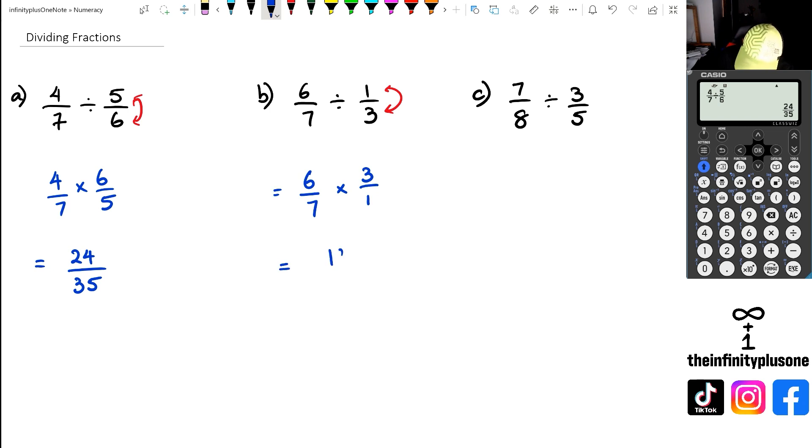Now I've got six times three, which happens to be 18, seven times one, which happens to be seven. And I don't think we can do anything beyond that. Now you might actually think about writing this as a mixed fraction, it's not necessary. But if you do, then you're looking at 2 and 4/7.